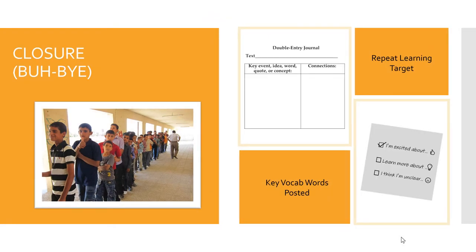To differentiate, there will be three journal entries that vary in complexity and difficulty. Students will also complete an emoji exit slip as they leave for lunch, so they can communicate whether they're excited about something, need to learn more, or feel unclear on the learning target for the day.